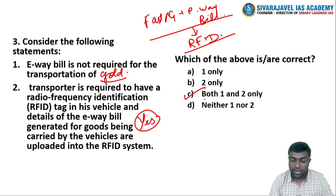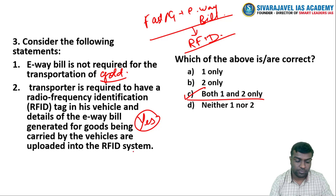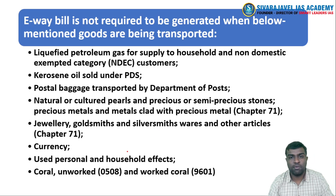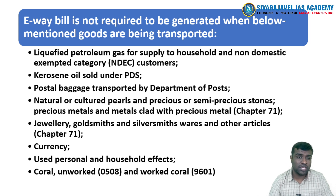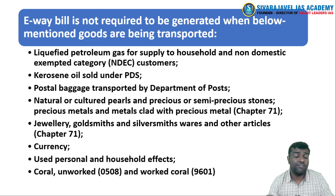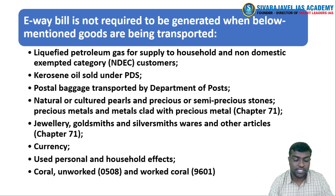Both statements 1 and 2 are correct options. Regarding the e-waybill, you would know that it is mainly in the context of GST. For transportation of any goods — both intra-state as well as interstate — there needs to be an e-waybill generated by the transporter. That is the main condition of the GST Act.